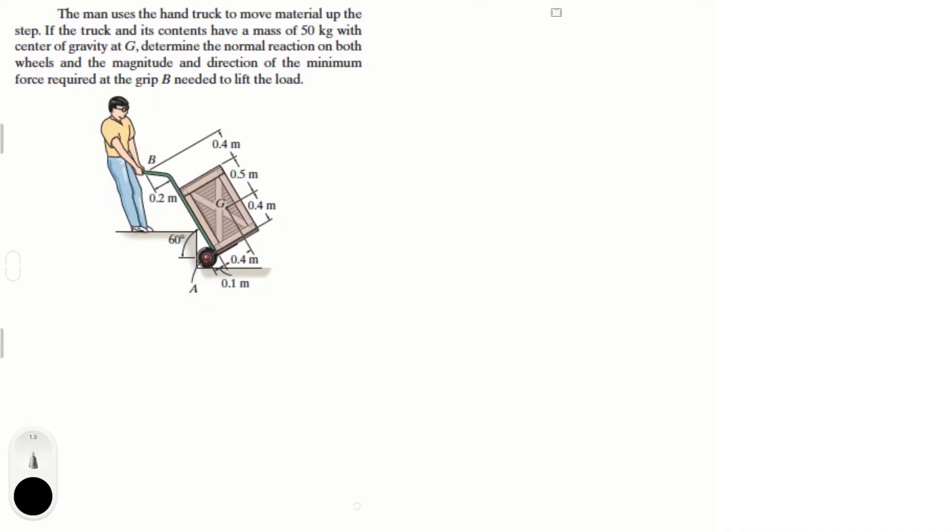The problem says: a man uses a hand truck to move material up a step. If the truck and its contents have a mass of 50 kilograms with a center of gravity at G, determine the normal reaction on both the wheels and the magnitude and direction of the minimum force required at the grip B needed to lift the load. Basically, they're asking for the force needed to move the hand truck and the reactions at A when lifting it.